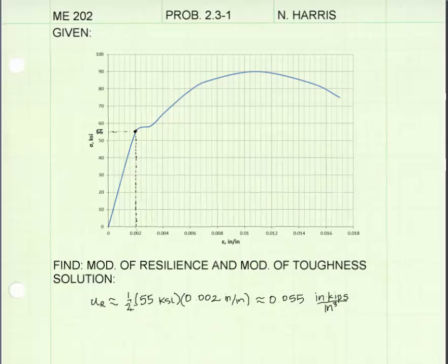That's represented here as one-half, because this shape is a triangle, times the height, which is 55 kSI approximately, times the strain, which is 0.002. I get 0.055, and the units for strain energy are inch kips per cubic inch.